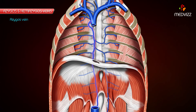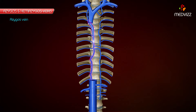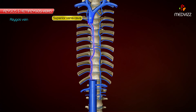Course and Termination. After formation, the azygous vein ascends and leaves the abdomen by passing through the aortic opening of the diaphragm and enters the posterior mediastinum. There, it ascends vertically lying in front of the vertebral column, up till the level of the 4th thoracic vertebra, where it arches forwards above the hilum of the right lung to terminate in the superior vena cava at the level of the 2nd costal cartilage.